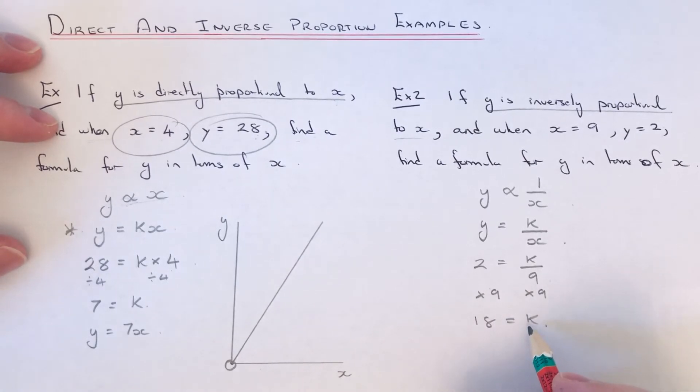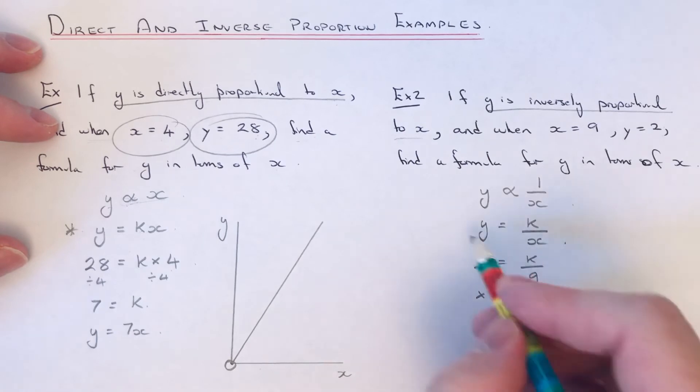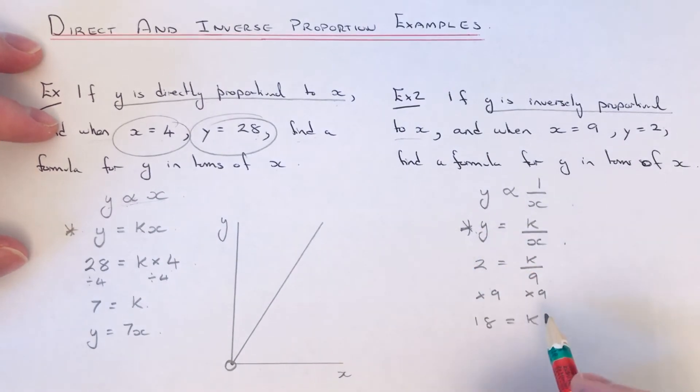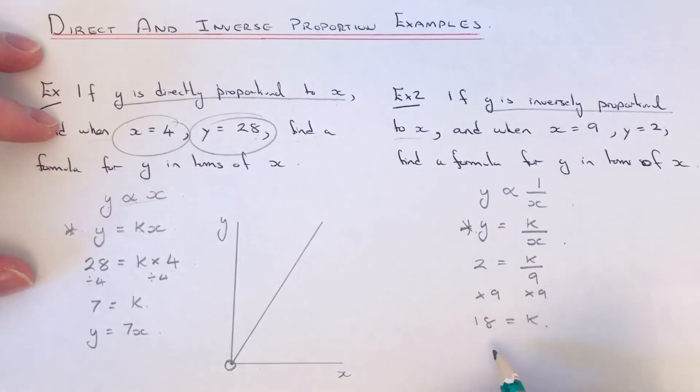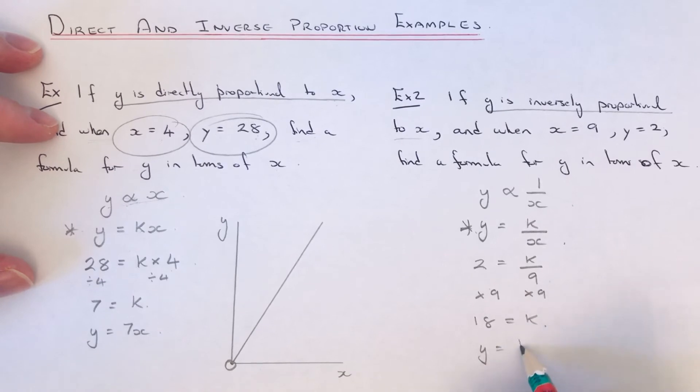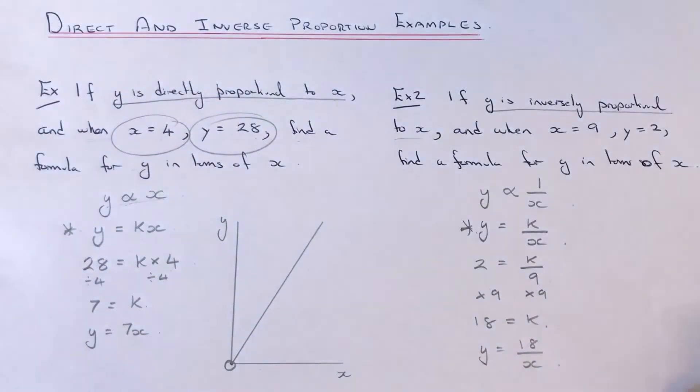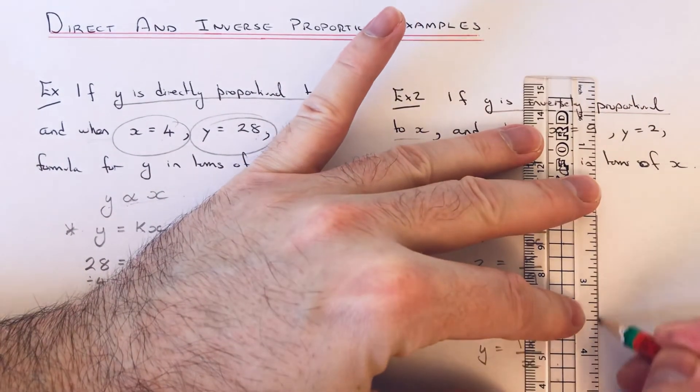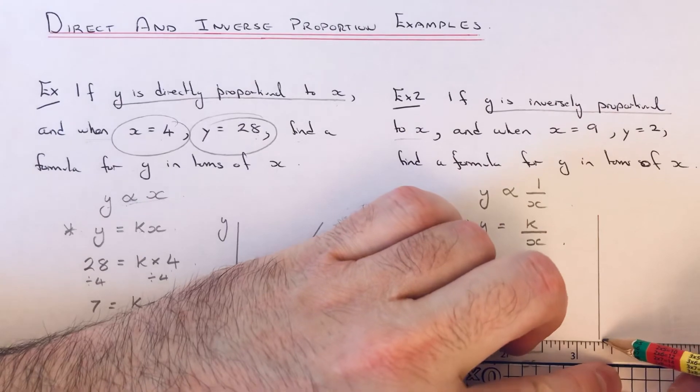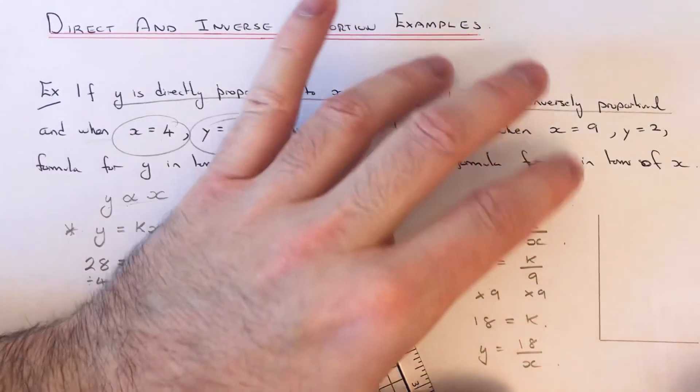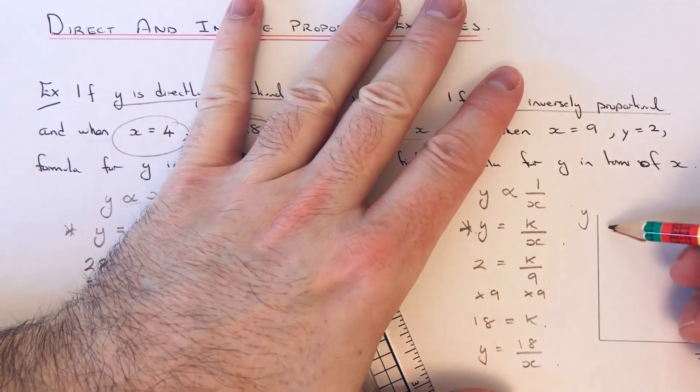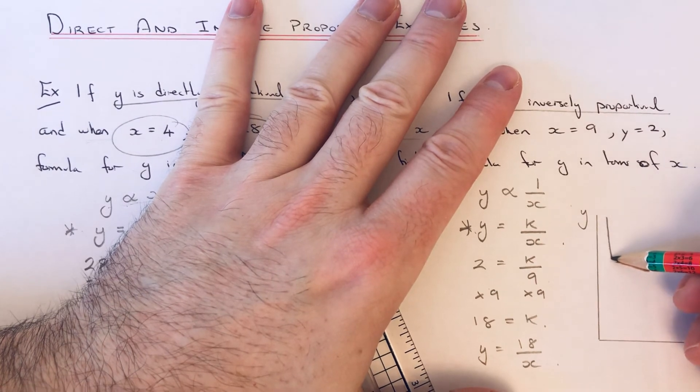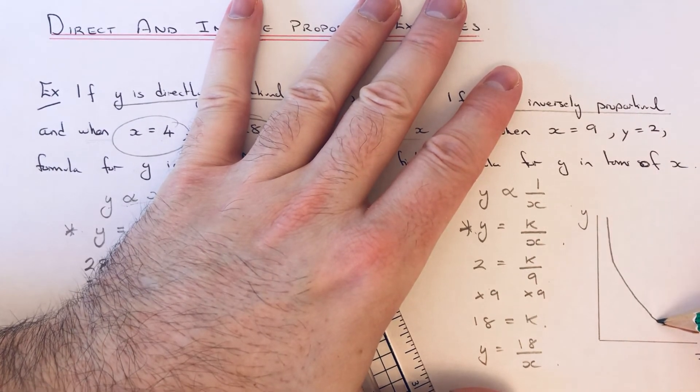So that is our value of k. And then we can just put it back into the formula that we had on the second line. So we get y equals 18 over x. So again, if we just sketch out this graph. With direct proportion, it will always be a curved graph going downwards.